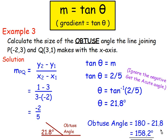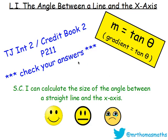This is a very important lesson — really the first key new formula we've learned at Higher. Practice these questions, and be very careful if asked for obtuse angles. Think about whether the gradient is positive or negative, as that tells you which way the line slopes. Try the questions in the book on page 211 and check your answers as you go.